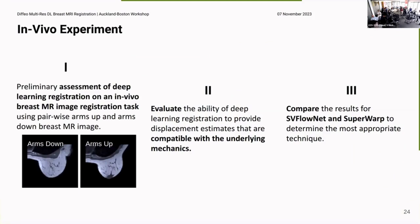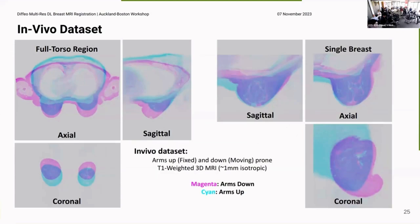So now the big question is, do these results extend to an in vivo experiment? So in this part of the work, I took some in vivo scans, which is arms up and arms down, which is a smaller deformation than prone to supine just as a test before we move to the clinical cases in order to evaluate the ability of deep learning registration to provide credible deformations of the underlying mechanics and then compare which network is more suitable. This is a snapshot of the data that I'm using. So you have your full torso image, and we've extracted a single breast. You can see the arms down image in magenta and the arms up image in cyan. So you can especially see here, it's quite a large displacement.